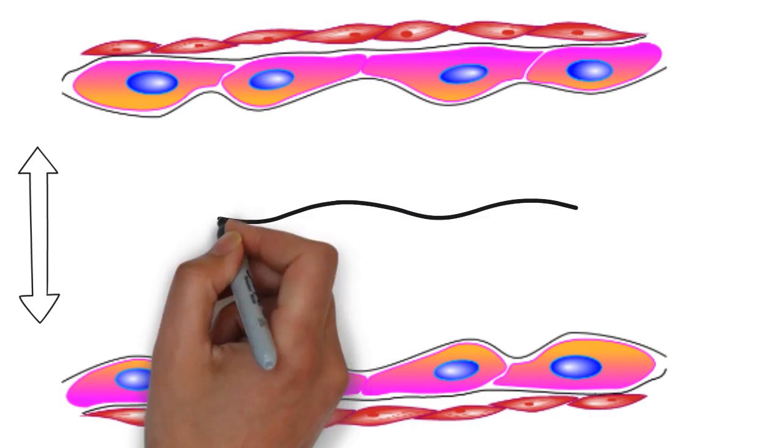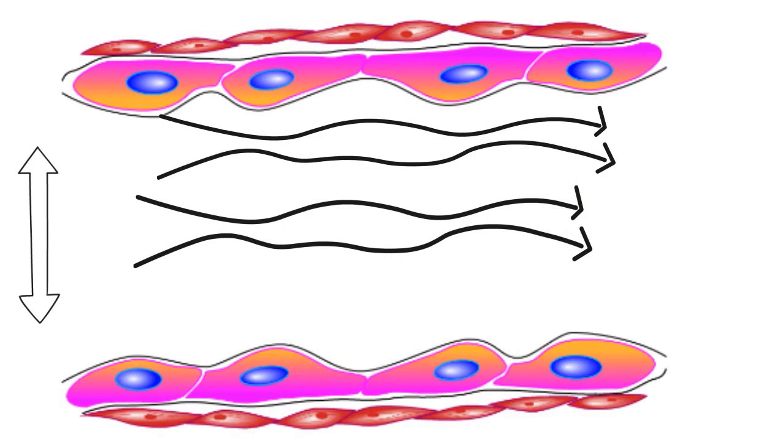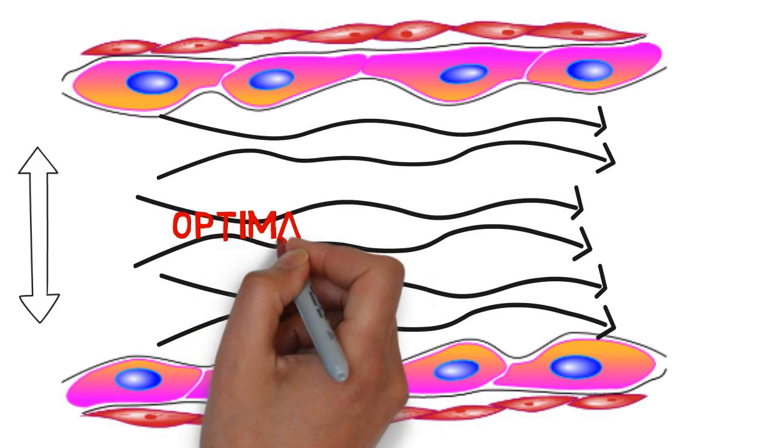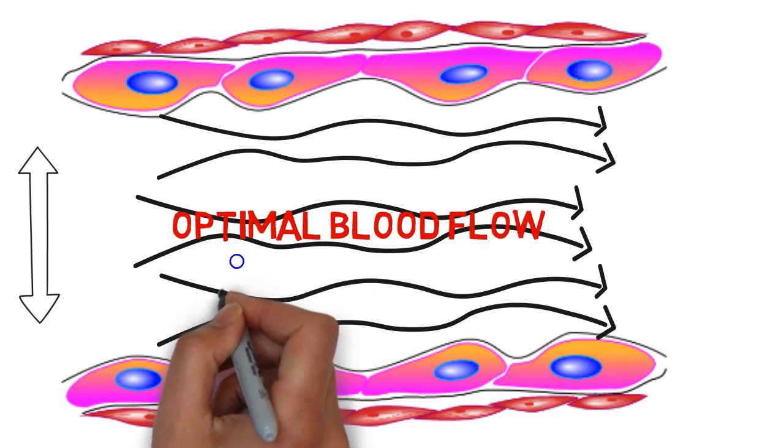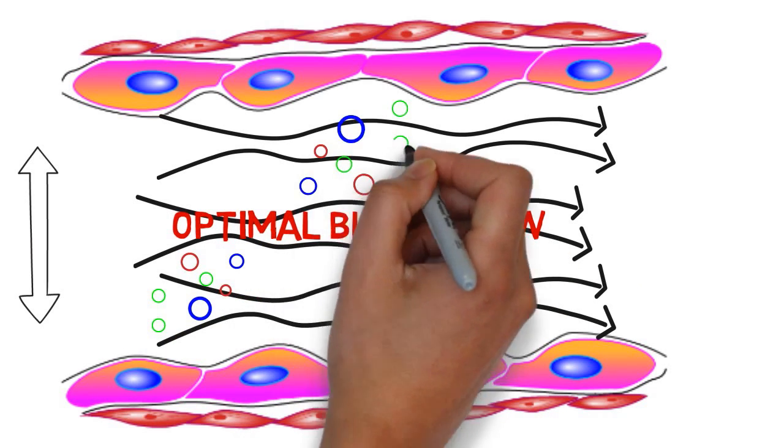This supports optimal blood flow to and from tissues, which carries muscle-fueling oxygen and key exercise-sustaining nutrients like glucose, antioxidants, and reparative amino acids.